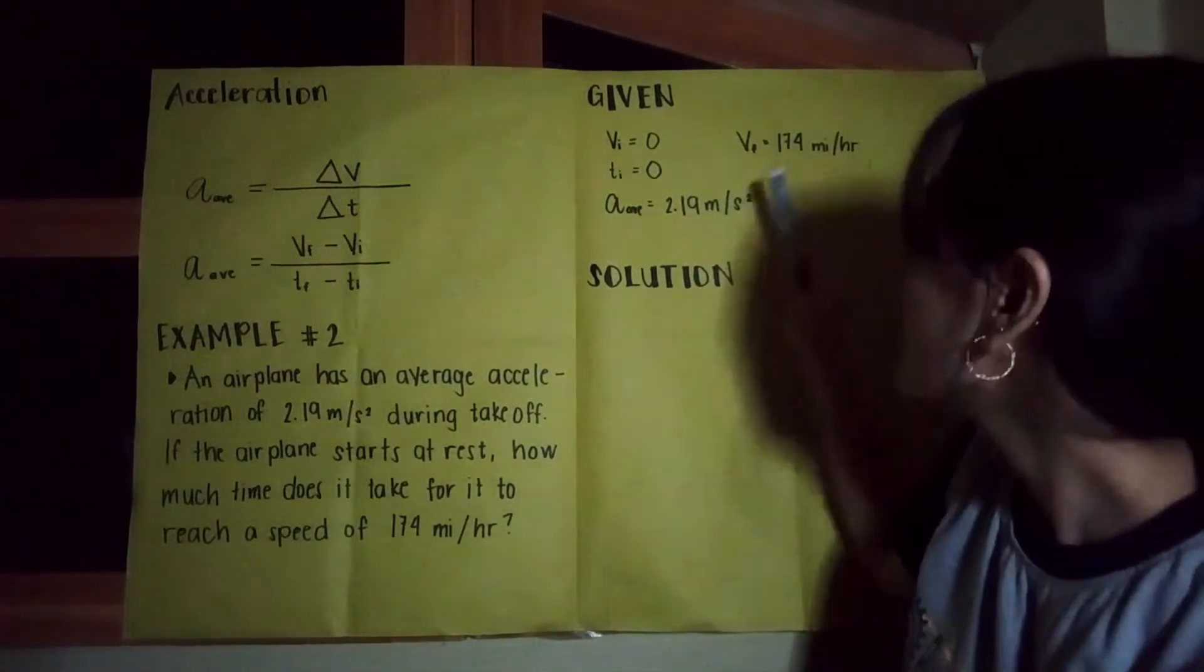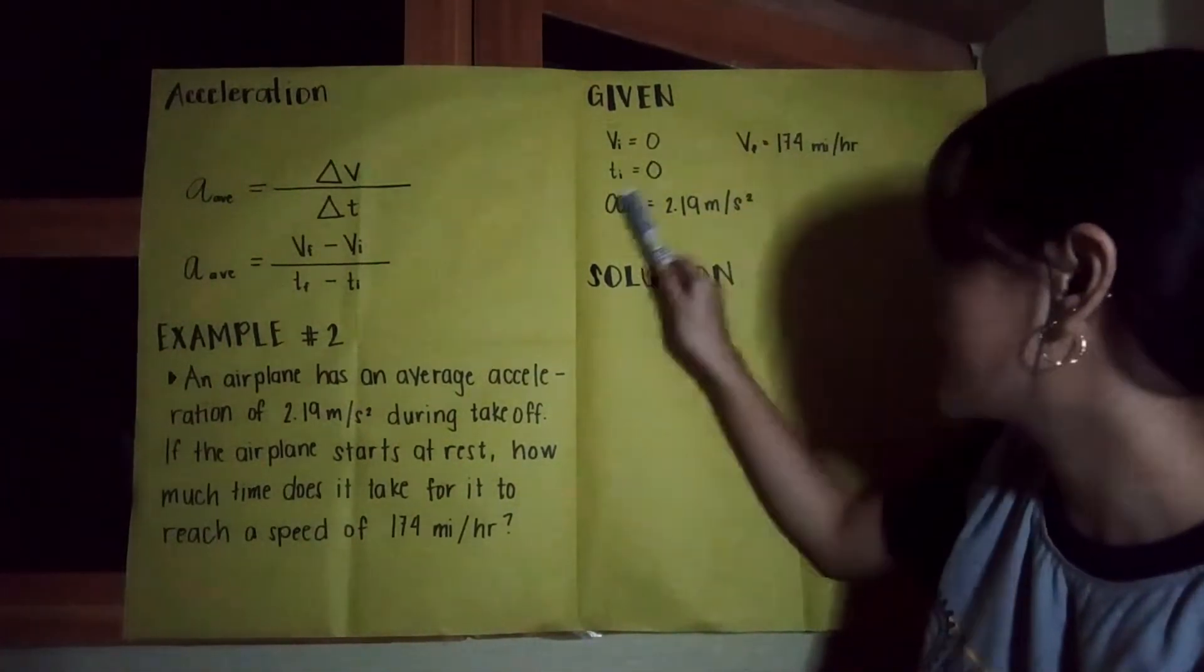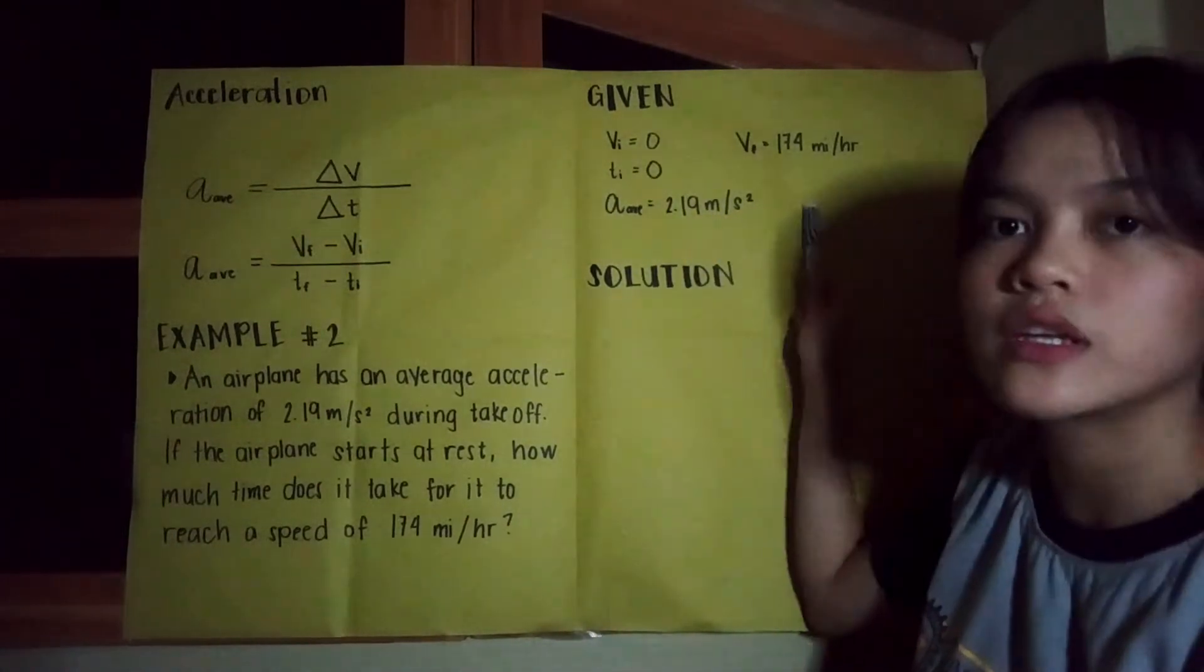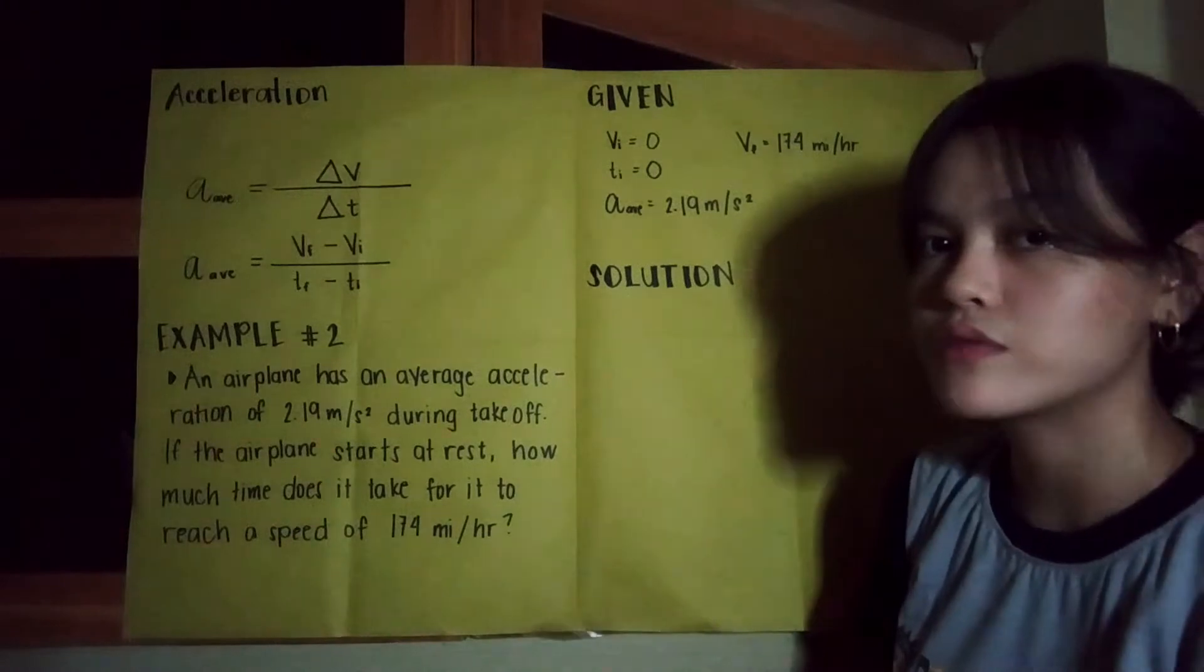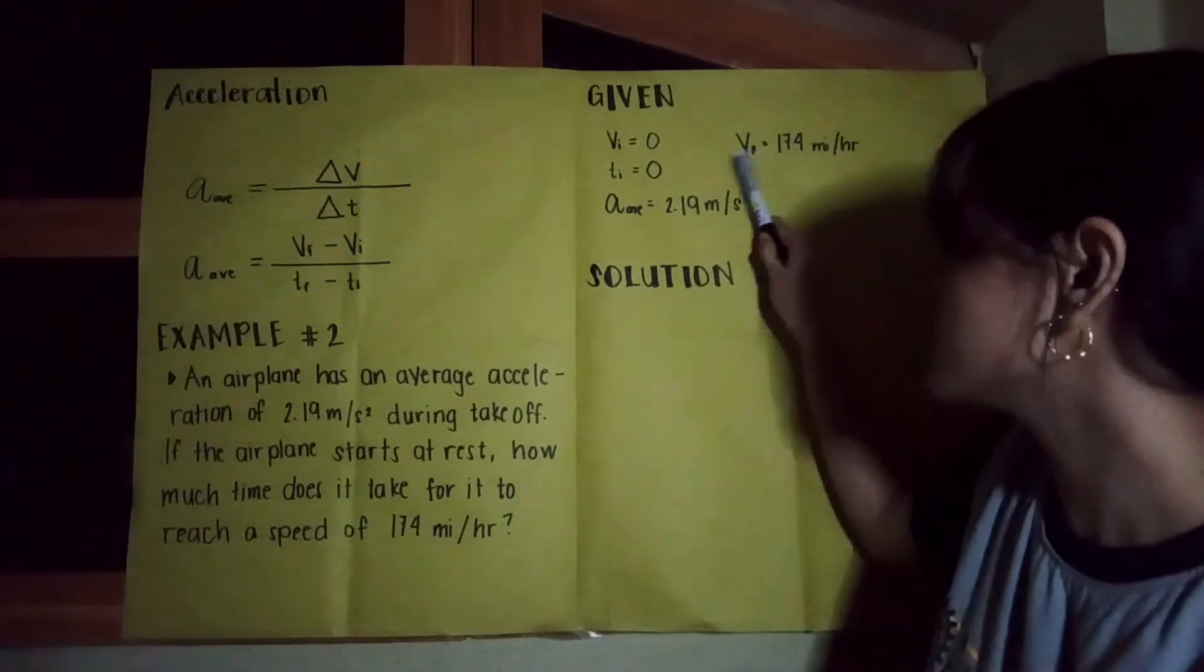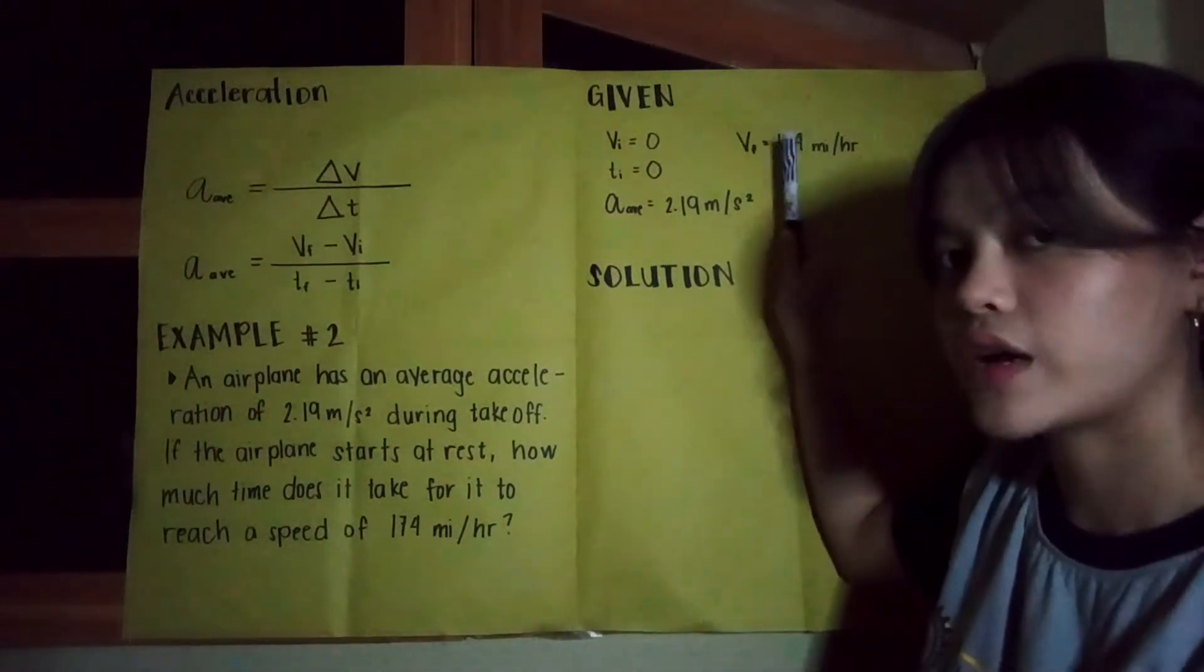As we can see, our final velocity and our acceleration have different units. So we need to convert either one of them so we can have similar units. Let's try to convert this final velocity.